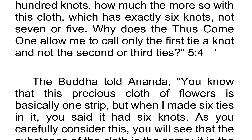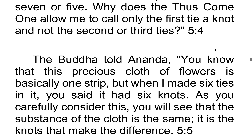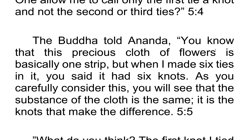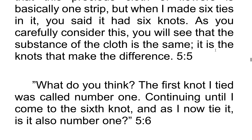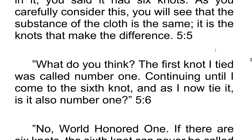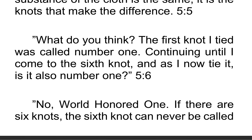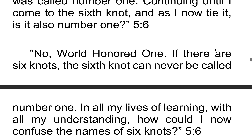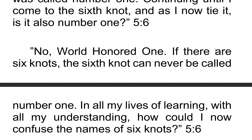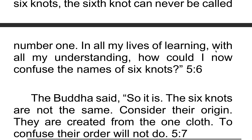The Buddha told Ananda, "You know that this precious cloth of flowers is basically one strip. But when I made six ties in it, you said it had six knots. As you carefully consider this, you will see that the substance of the cloth is the same. It is the knot that makes the difference. What do you think? The first knot I tied was called number one, continuing until I come to the sixth knot. Is it also number one?" Ananda replied, "No, World Honored One. If there are six knots, the sixth knot can never be called number one. In all my life of learning, with all my understanding, how could I now confuse the names of six knots?"